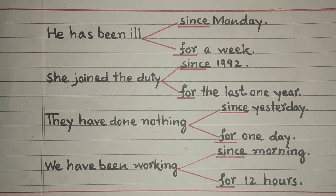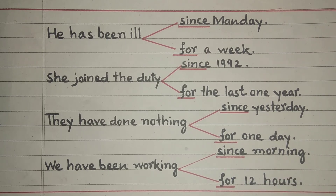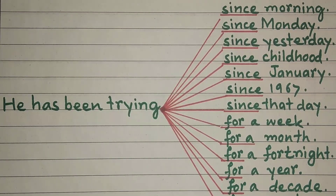Hum baara ghanton se kaam kar rahe hain — we have been working for 12 hours. Toh is tarah bolna hoga. Also: since night, since afternoon. Dear students, practice karte rahein aur waqt-e-zaroorat apne ustaad se rahnumaai haasil kijiye.